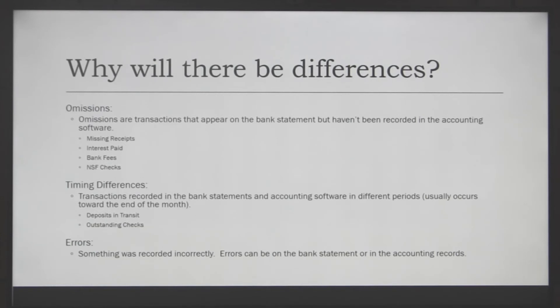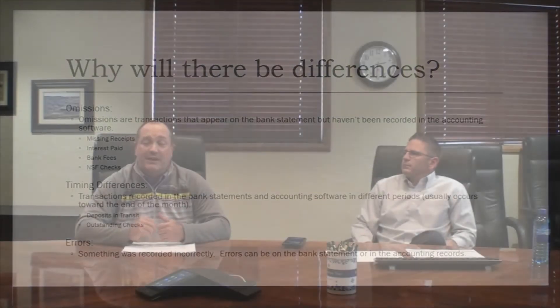The other thing — this doesn't happen all that often, but it can happen — would be errors. This can be either on the bank side or on the accounting software side. Some of the most common things we see when customers bring us their records to help them reconcile are issues with automatic payments. In today's world, there are a lot of automatic ACH payments where a customer may forget to write it down or it came out earlier than they were expecting.